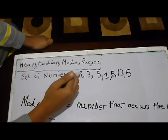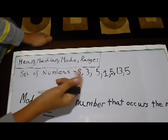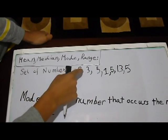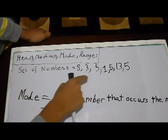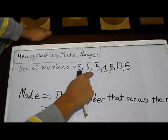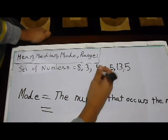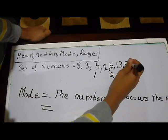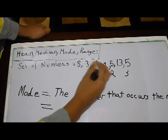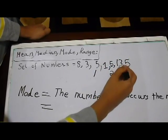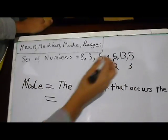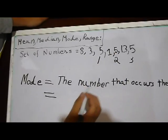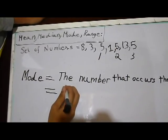So, let's count it. So, it's 8. It's only one time, because there's no more 8s. 3. No more 3s. 5. I can see some 5s. So, I see 1, 5. That 5. And that 5 is the third one. And then the 1, only 1. 13. No, for 13. So, the mode would equal to 5.